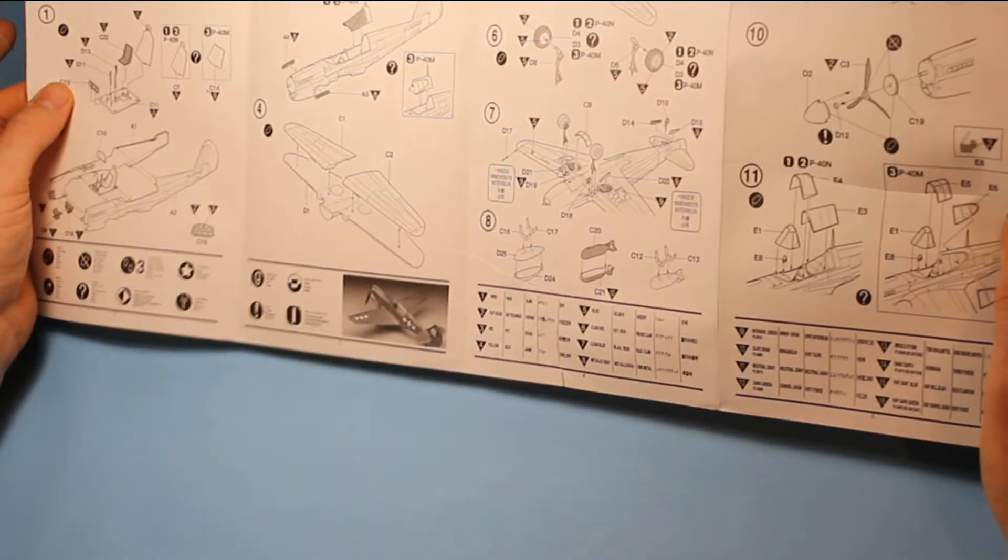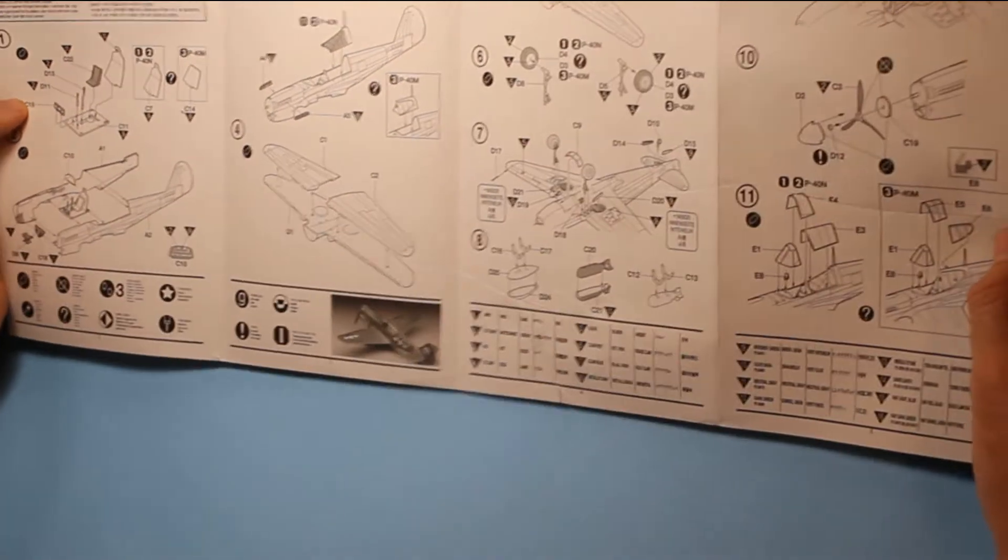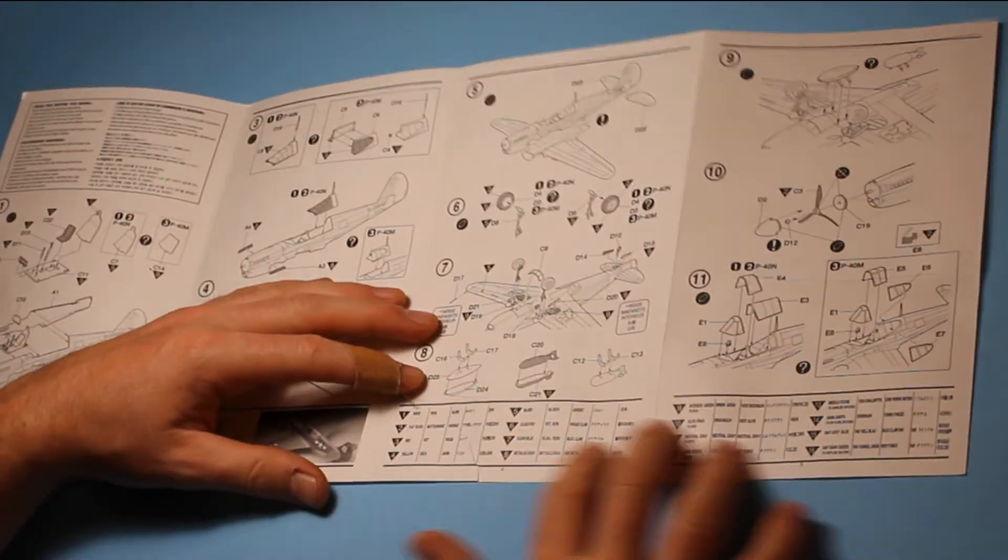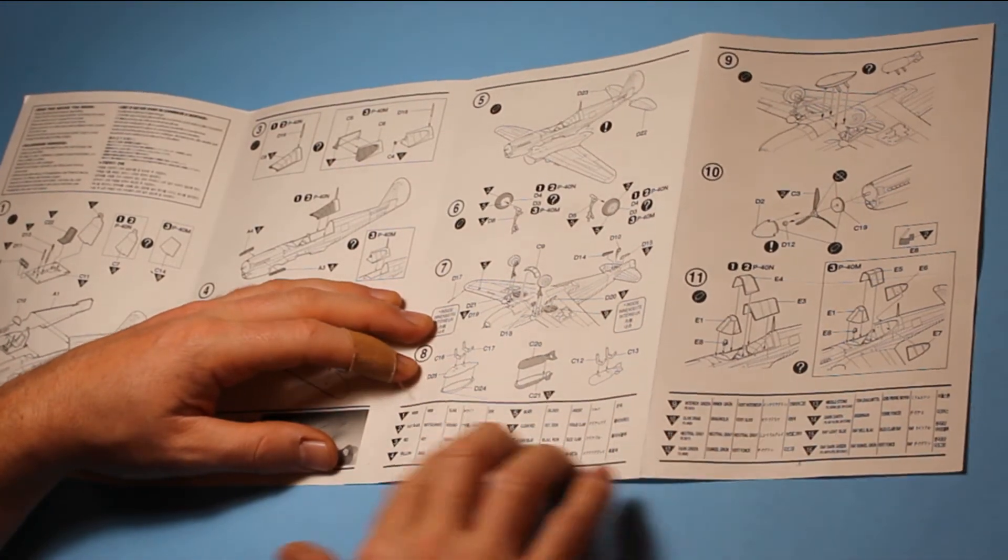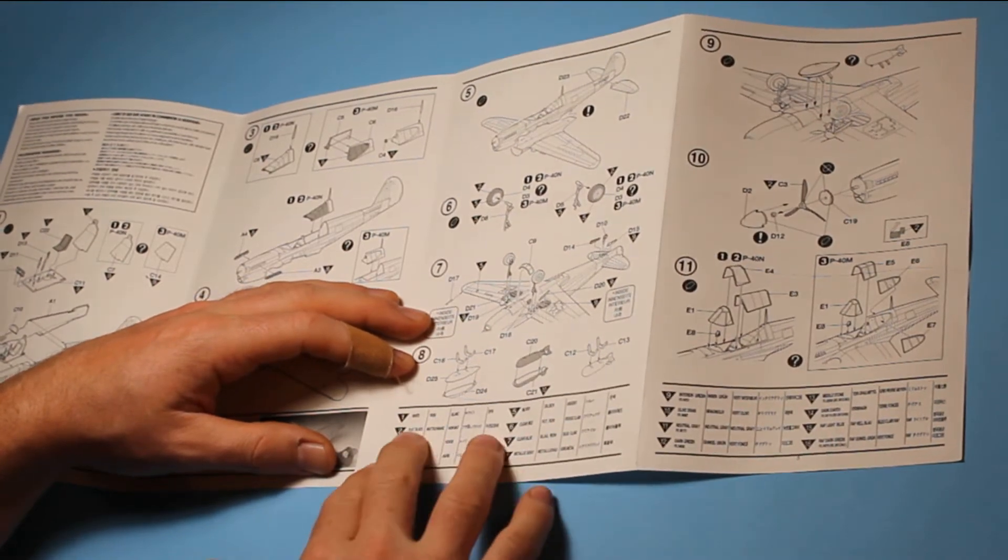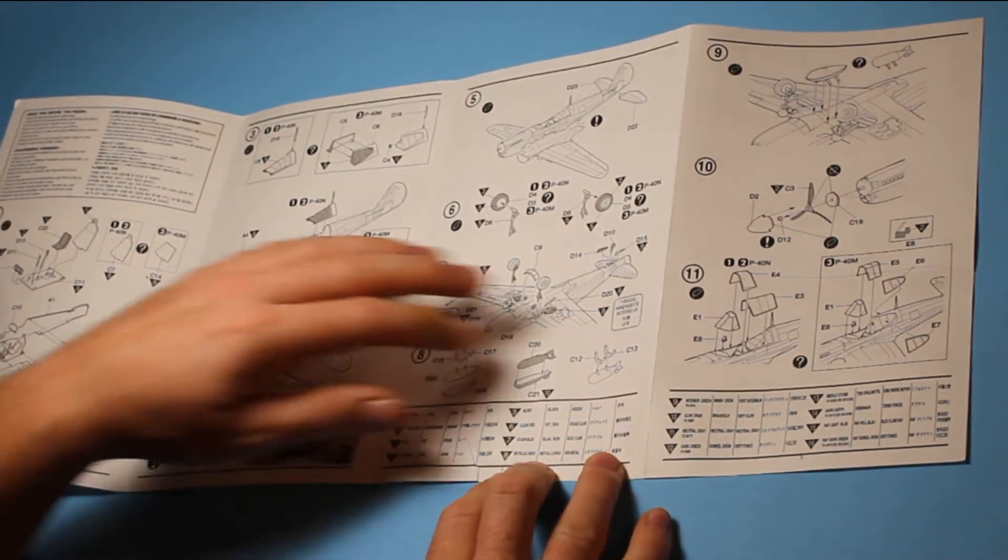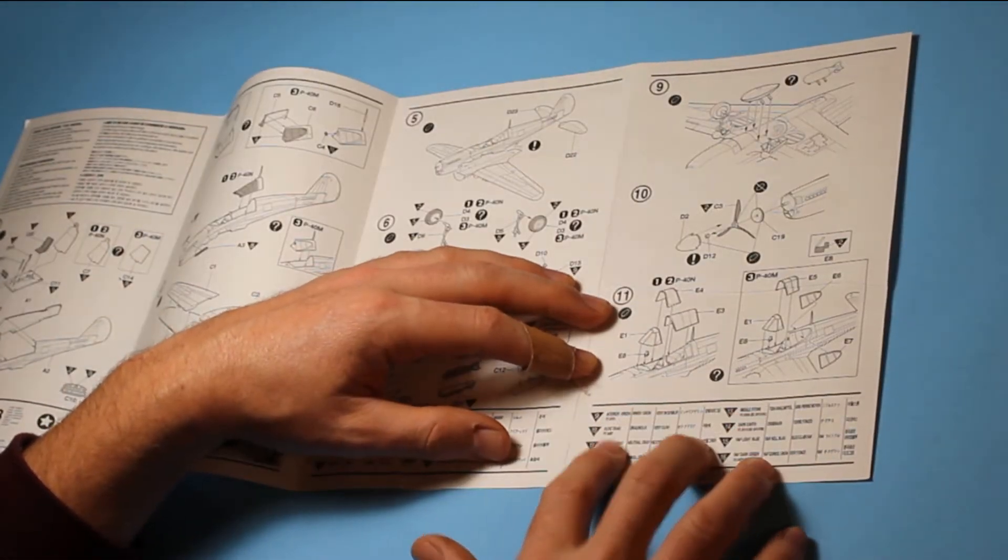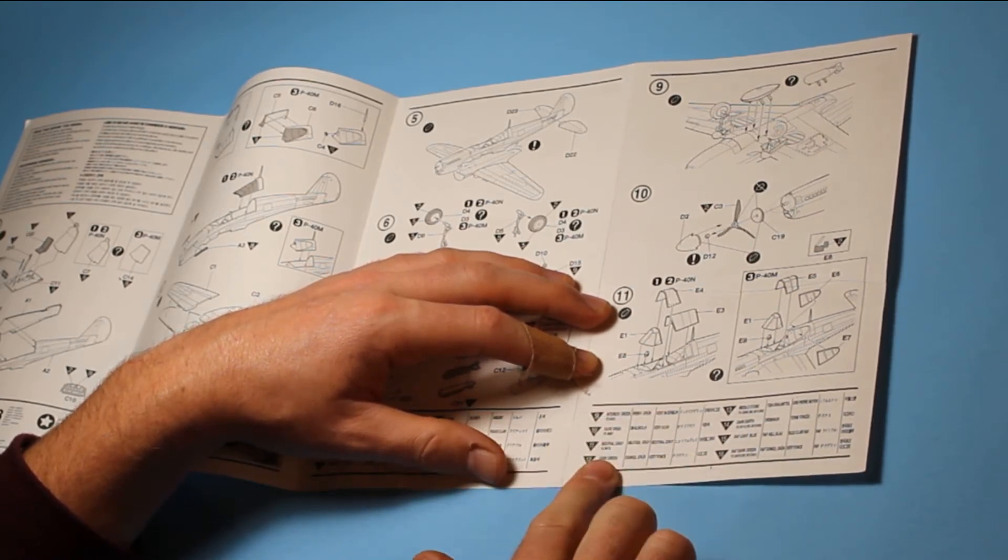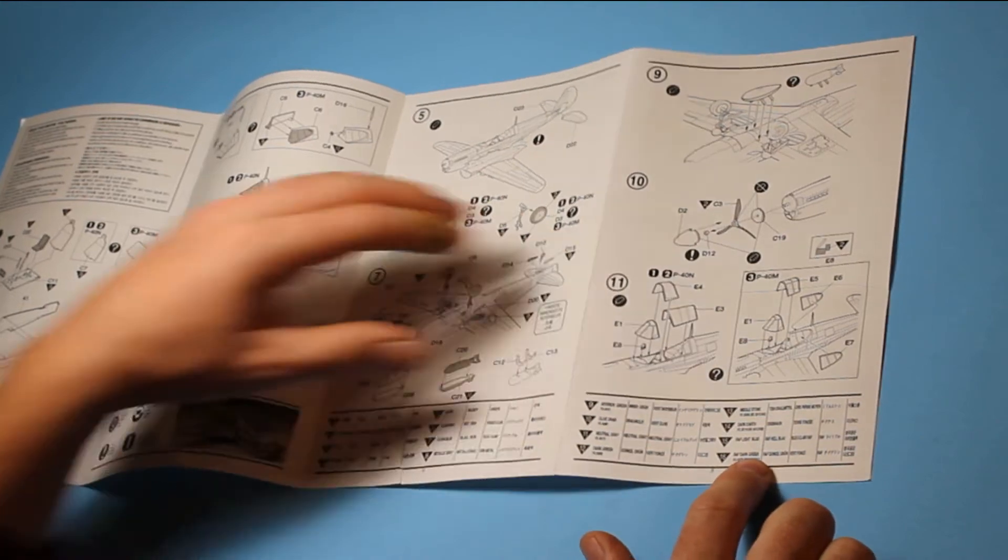Forgot to mention that paint call-outs in these, paint call-outs through this is generic, so it's just telling you the actual colors. It's not using a paint manufacturer here from what I can see. So you've got, for instance, white, black, red, yellow, metallic gray, interior green, and it gives you the FS number, and olive drab, neutral gray and dark green, all with the FS numbers as well as the RAF numbers. So it should be quite easy to use those for the paints that you're used to using.